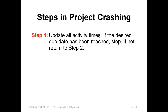The fourth step: update all activity times. If the desired due date has been reached, stop. If not, return to step two. So we crash an activity, check feasibility and minimum cost, then look at the overall project duration. If the goal — say finishing in 14 weeks — has been met, we stop. If not, we identify another activity to crash and continue until we reach the required due date.